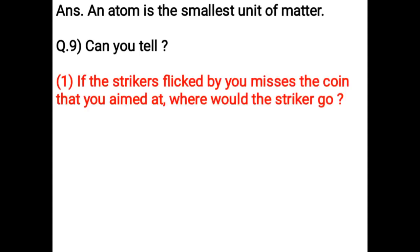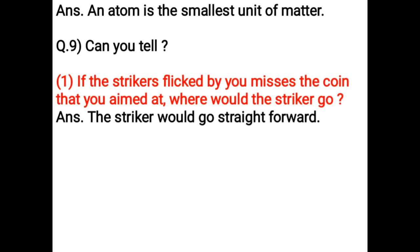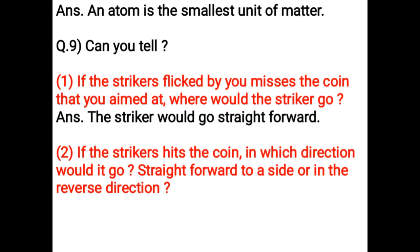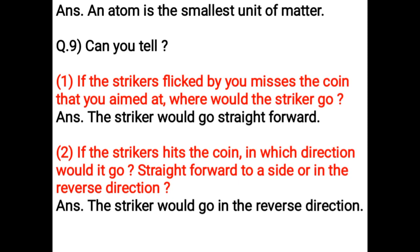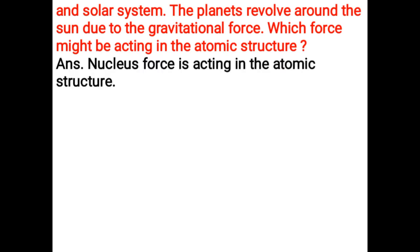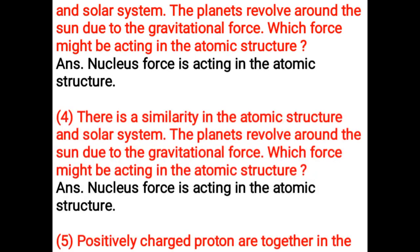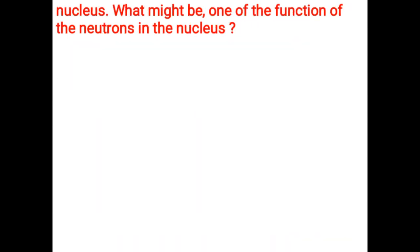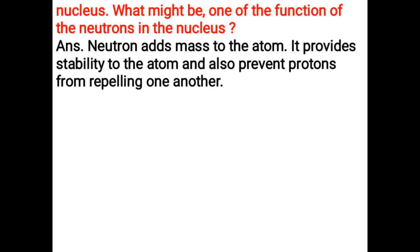Can you tell: if the striker you hit misses the point you aimed at, the striker would go straight forward. If it hits the point, it would go in the reverse direction. There is a similarity between atomic structure and the solar system — planets revolve around the sun due to gravitational force; similarly, a nuclear force acts in the atomic structure. Neutrons add mass to the atom, provide stability, and prevent protons from repelling one another.